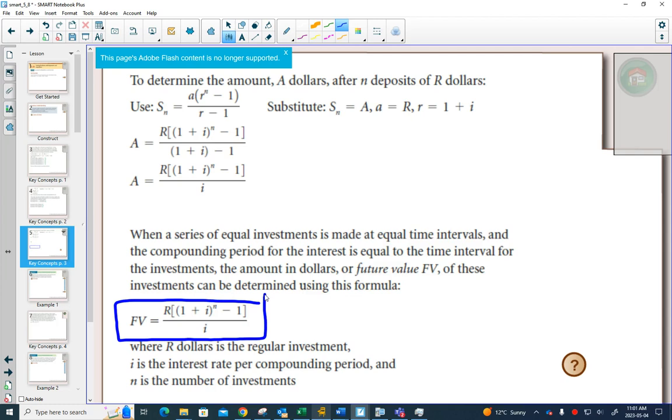Once again, the formula, if you're given it on a test, I will give you the formula and explain what each of the things stand for. So here, FV stands for the future value of the investment. R is how much you're putting away every month, or how much each of your investments are.